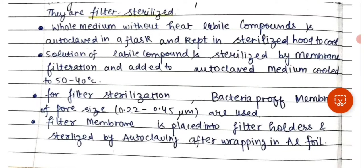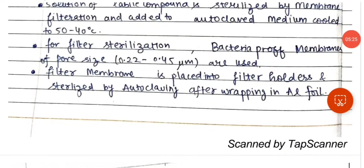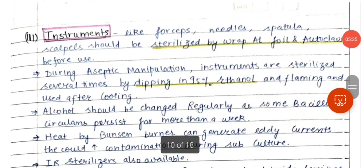We use membrane filters to remove microorganisms from the solution. For antibiotics, serum samples, and vaccines, filtration is preferred. Membrane filters with a pore size of 0.22 to 0.45 micrometers are used. Next is sterilization of instruments such as forceps, needles, spatula, and scalpels.